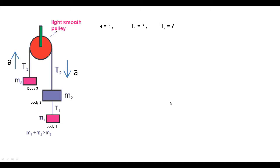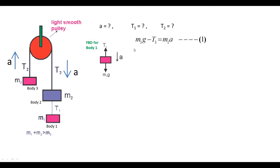We draw three free body diagrams for body one, body two, and body three, then solve for acceleration a, T1, and T2. For the free body diagram of body one: tension T1 acts upward and weight m1·g acts downward. Since acceleration is downward, m1·g must be greater than T1, giving the equation: m1·g minus T1 equals m1·a.